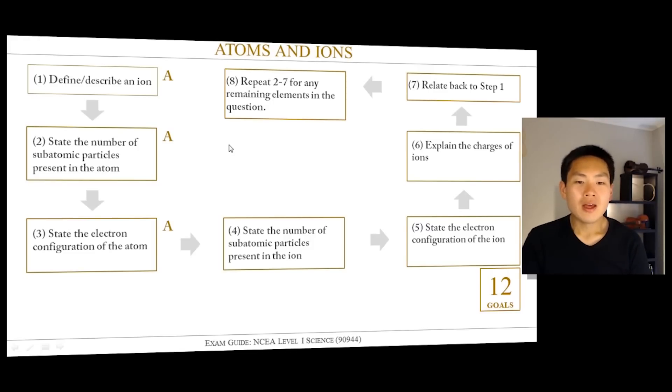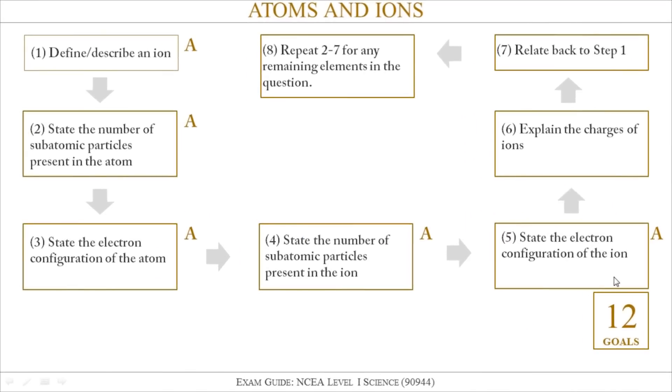Now just to recap, your first five steps are essentially mainly just achieve level criteria - they just achieve level points. Once you get to about step six and get into the actual guts of the question, that's when you're getting into more depth and I will start scoring you some merits as well. Same with step seven when you relate it back to the definition of an ion. But step eight, where you get your excellence, is if you can pretty much go around the cycle repeatedly and perfectly for all the atoms that are in the question.